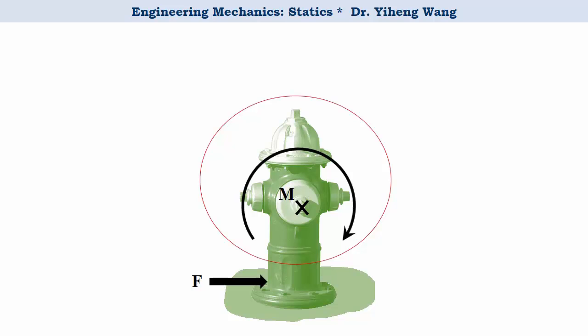So again, in order to keep the fire hydrant static, the ground must create a force pointing to the left, and a counterclockwise moment to cancel out the rotational effect. So this force moment system is an equivalent system as the previous single force system.